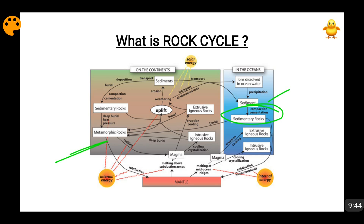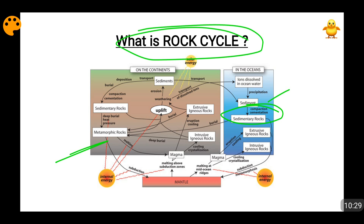Now, how do we form sedimentary rocks from metamorphic rocks? Many times metamorphic rocks are also exposed to the surface of the earth, even though mostly they form beneath the surface. But because of erosion, they get exposed to the surface. When metamorphic rocks are exposed to the surface of the earth, the same agents of denudation act on them — weathering and erosion happens, sediments come apart, sediments deposit, compaction happens, cementation happens, and again sedimentary rocks are formed. So you can see that this whole process is going on, converting rocks from one form to another, and this whole combined process is termed as the rock cycle, driven by external solar energy and the internal energy of the earth.